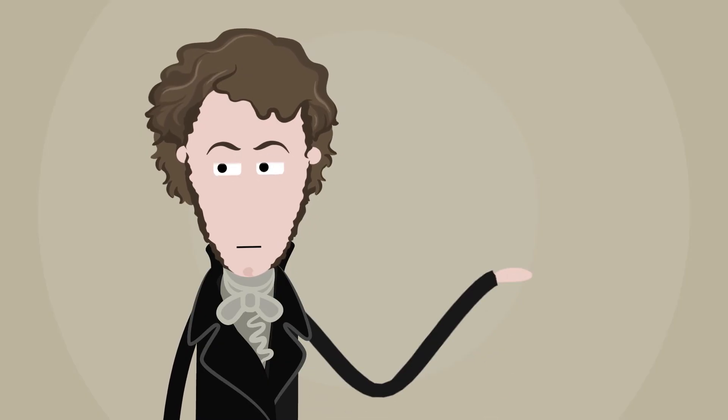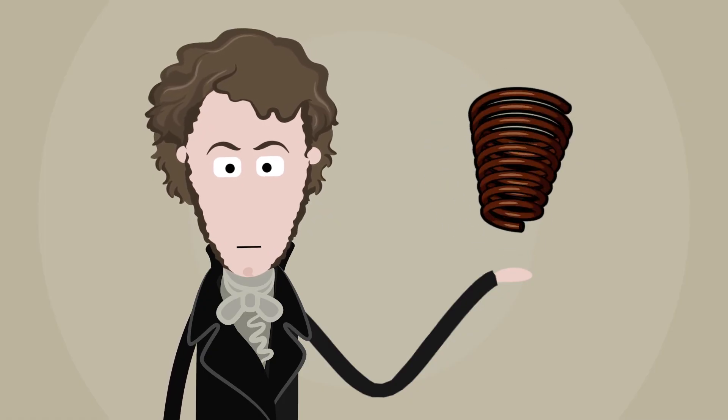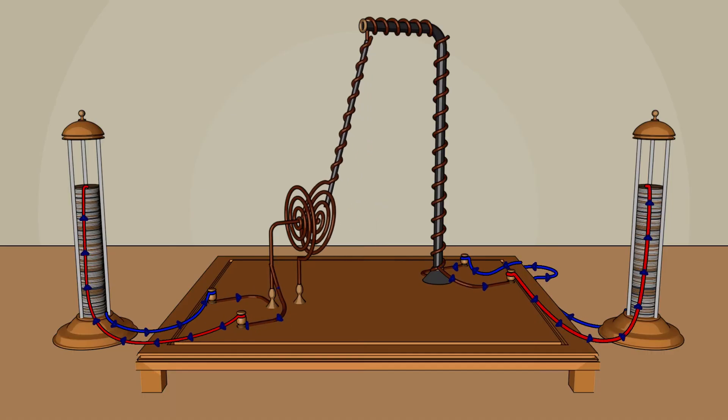Ampère shows that the two wires wound in turn, spirals or helices, behave exactly as two magnetic poles would.